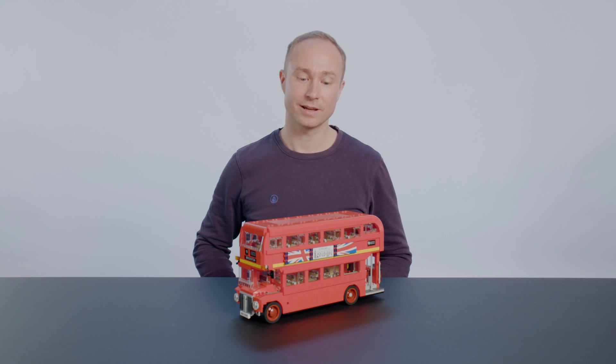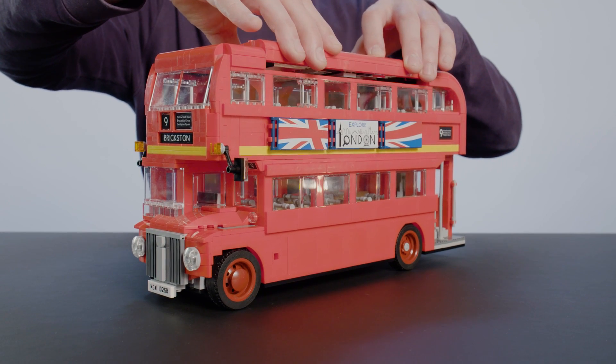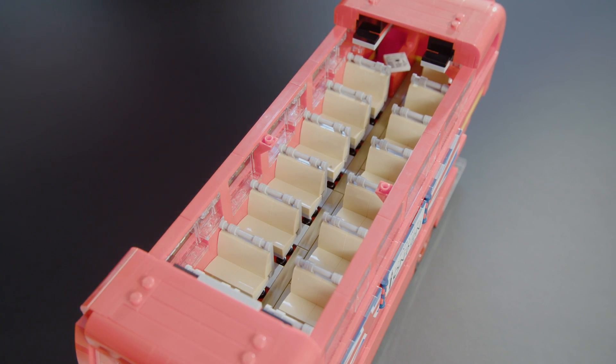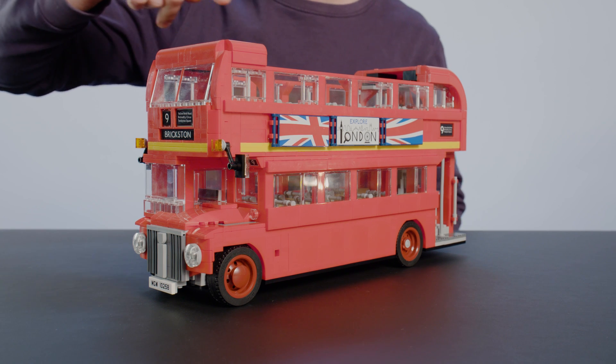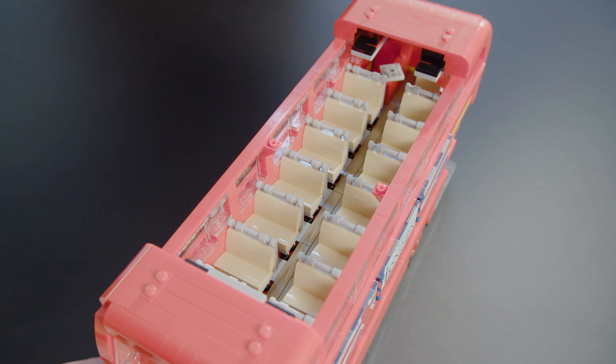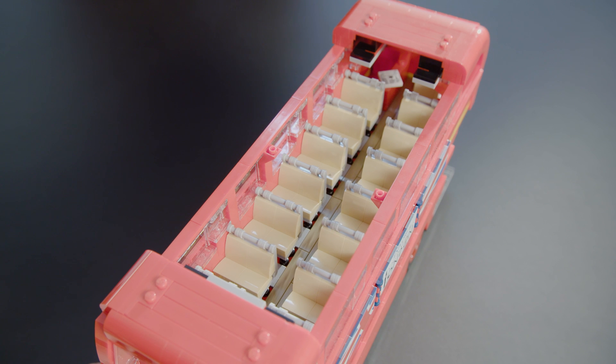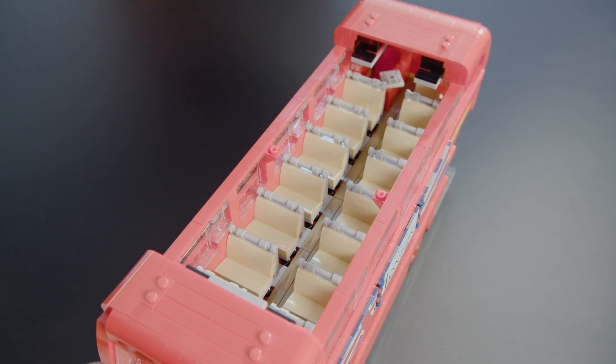Now to see what's inside, we can lift off the roof of the top floor and we can see that it has a lot of seating. It actually has seating for 36 passengers upstairs, and just like in real buses, we can see that passengers leave stuff behind.